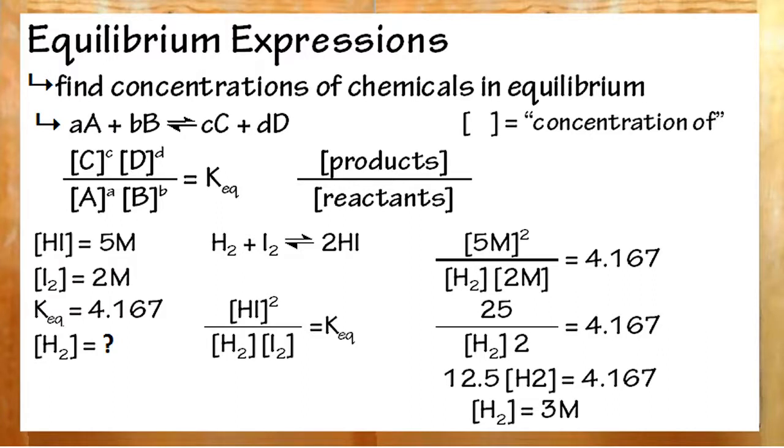You can write that as an equilibrium expression here. The concentration of your chemicals raised to the power of their coefficients is equivalent to a constant, K, which changes depending on your reaction. Just remember to put your products over your reactants, and then solve for whatever you're missing.